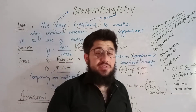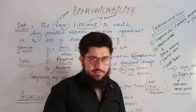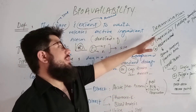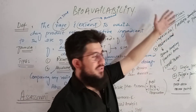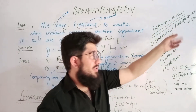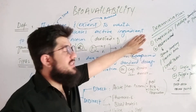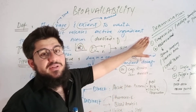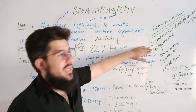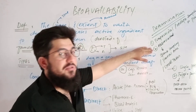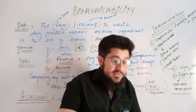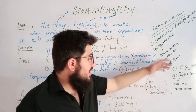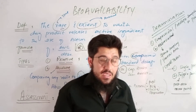Now let's come to determination — how to determine bioavailability. We have two main methods: trapezoidal and abbreviated. The other names and terms are simply alternate names for these two methods. For example, the trapezoidal method is also called the multiple sampling method or the planimetric method. The abbreviated method is also called sparse sampling, partial area, or short-term method. In short, we have just two main methods.